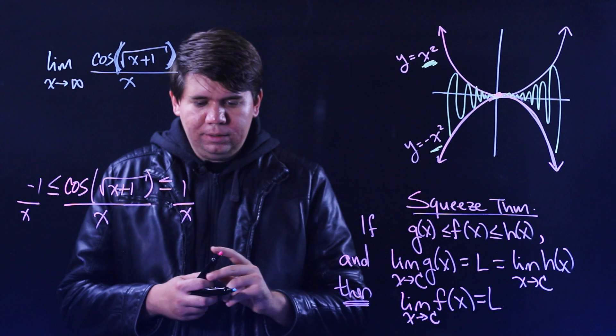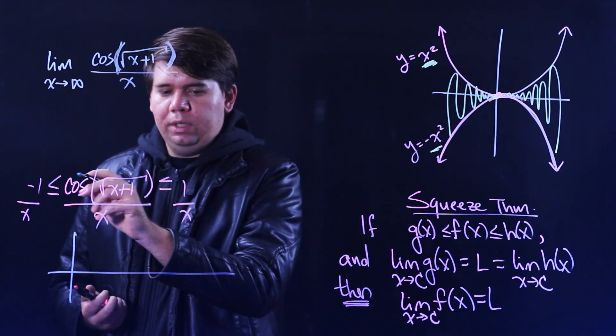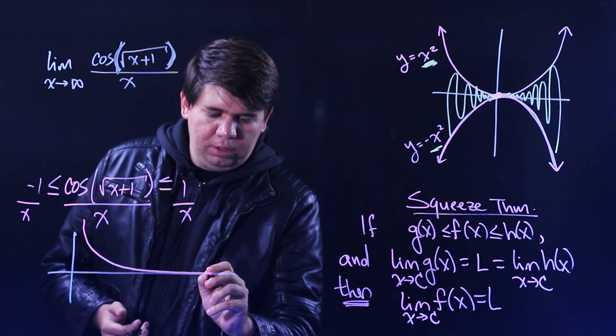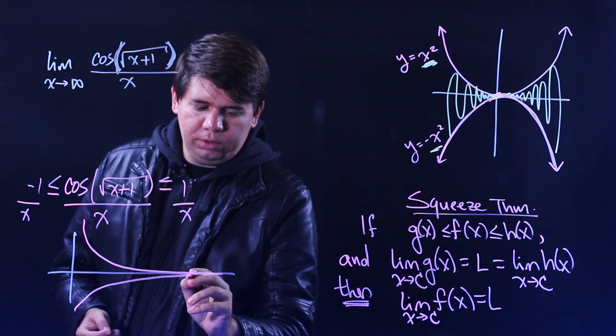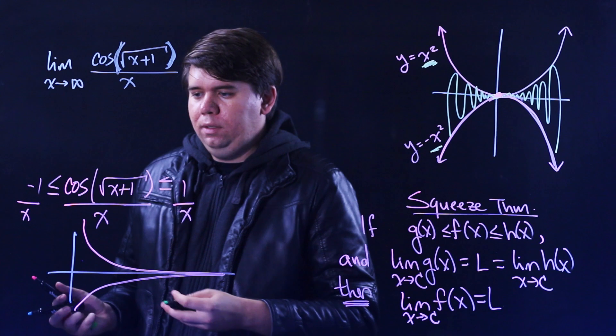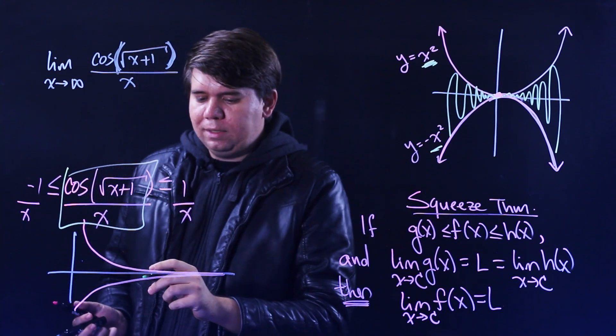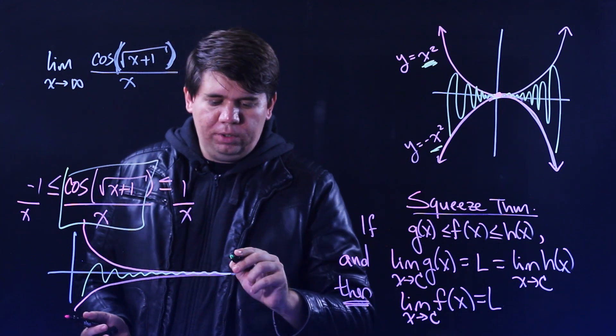If you were to draw a graph of this, we can do that. Here's our graph. What does 1 over x look like? 1 over x is shrinking and closer and closer to zero. Minus 1 over x is coming up, getting closer and closer and closer to zero. And so here, your cosine of the square root of x plus 1 divided by x is trapped between those. Who knows what it's doing? But it's trapped between those.